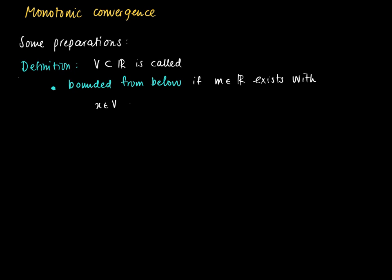So it should hold that for any element in V, X should be larger or at least equal to m, small m, which is the same as saying that X should be at least m for all X's in V.